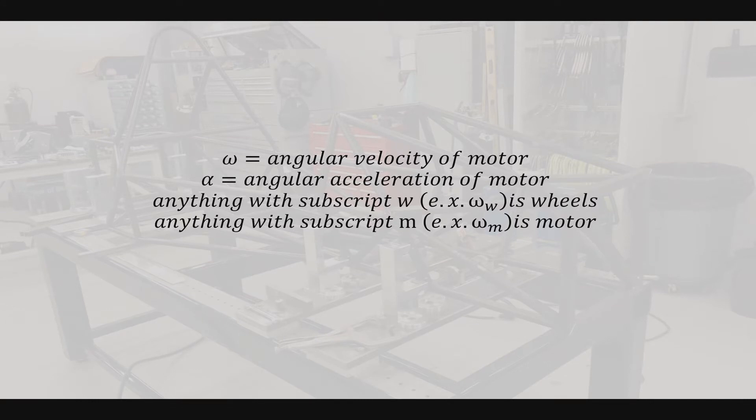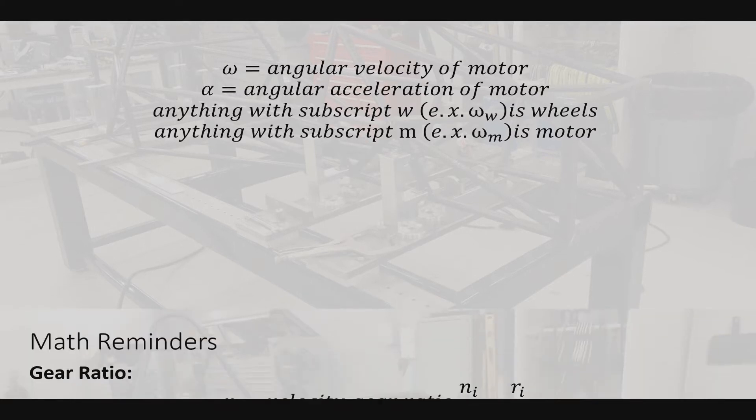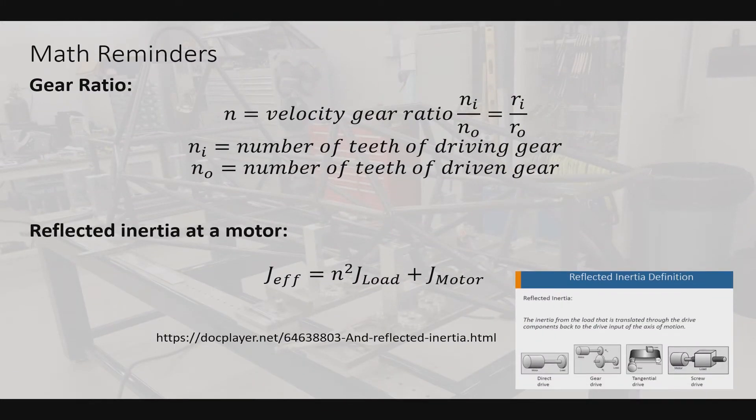This is the notation I'll be using. Basically sub W means wheel, subscript M means motor. No subscript also means motor. I was just feeling lazy because there's a lot of terms connected to the motor. The gear ratio I'll be using, N will refer to input over output. And then also, I'm not going to go over effective inertia, but you'll need to account for reflected inertia yourself if you don't know how to do that. Maybe this document that I've linked here will be a good place to start.